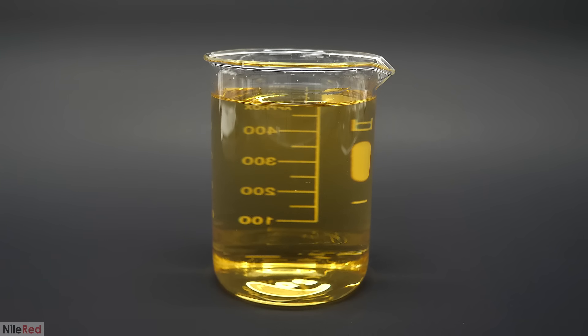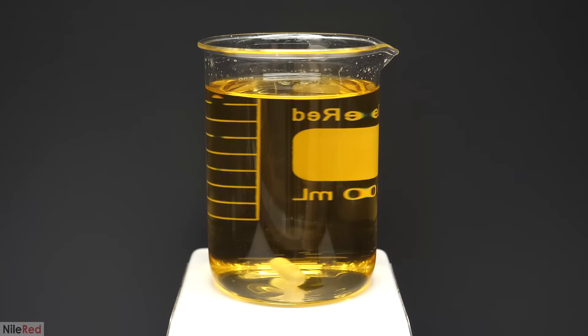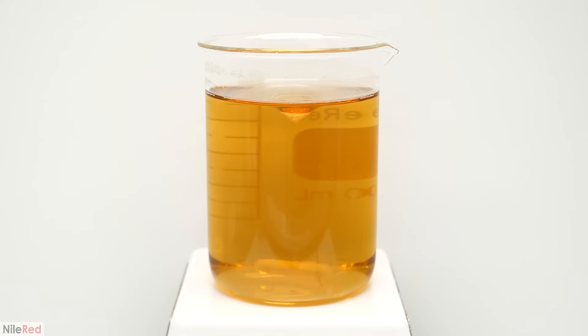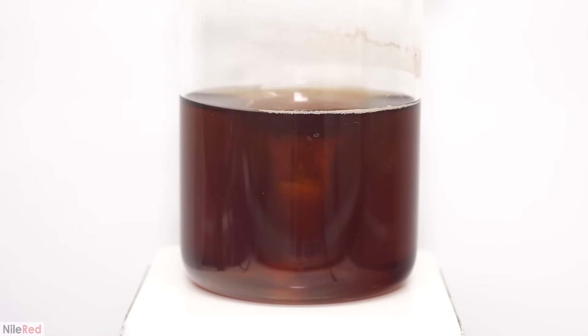So what I decided to do instead was to just throw it on a hot plate and evaporate off all the water. After heating it for several minutes, the color started changing and it became kind of brown, so I swapped it for a nicer white background. Over the next couple hours, all the water disappeared, and I was left with an almost dry powder.